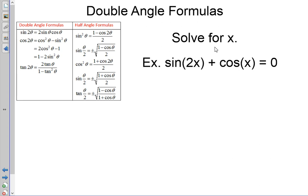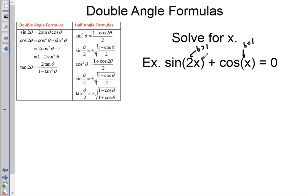We want to solve for x here — we're going to try to find all the solutions to this particular equation. We notice that we have sine of 2x plus cosine of x. In previous problems when we solve for x, we look at our b values, and normally there's one equation with a b value greater than one. In this case, we have a b value greater than one and a b value equal to one.